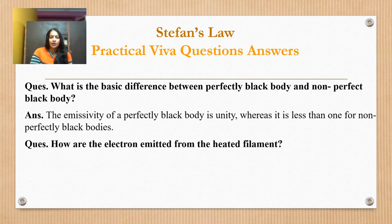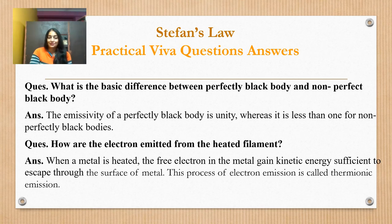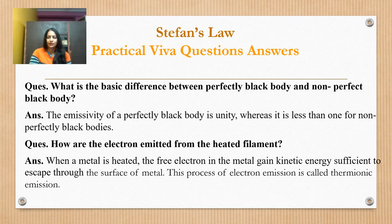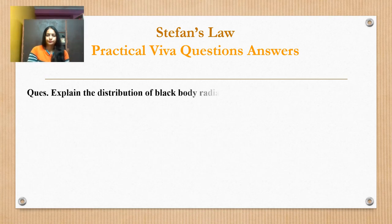How are electrons emitted from heated filaments? When the metal is heated, the free electrons in the metal gain kinetic energy sufficient to escape through the surface of the metal. This process of electron emission is called thermionic emission.